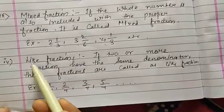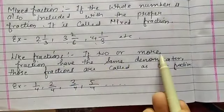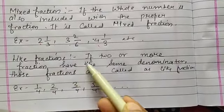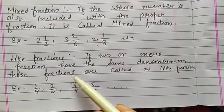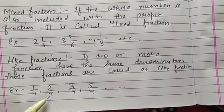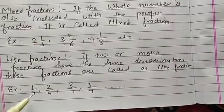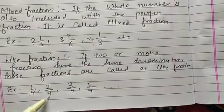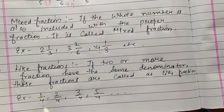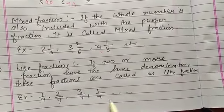One more fraction is like fraction. What is like fraction? If 2 or more fractions have the same denominator, those fractions are called like fractions. Example: 1 by 4, 2 by 4, 3 by 4, and 5 by 4, and so on. In all these fractions, the denominator is the same. Always keep in mind: in like fractions, denominators are same.